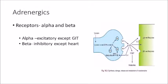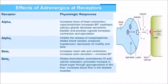Noradrenaline is stored in vesicles, released near the effector organ, and binds to either alpha or beta receptors. There are two alpha receptors — alpha 1 and alpha 2 — and three beta receptors — beta 1, beta 2, and beta 3. We will focus on alpha 1, alpha 2, beta 1, and beta 2 as these are the important ones.